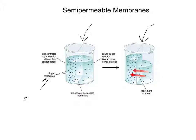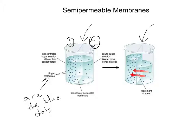The sugar molecules are the blue dots. These blue dots are at a higher concentration on side one than on side two at the start. At the start of the process, side one has more sugar and less water, while side two has more water and less sugar. So side one is more concentrated and side two is less concentrated.